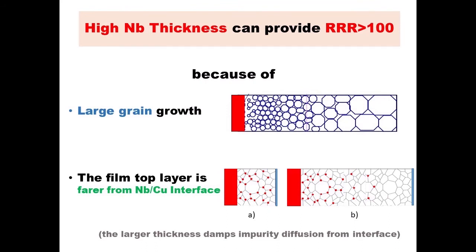Can a high niobium thickness provide RRR greater than 100? Yes, for several reasons. A larger thickness produces larger grain growth, and larger grain size gives higher RRR. Additionally, impurities can diffuse from the niobium-copper interface. With a small thickness, the top layer reached by the RF field is immediately contaminated by impurities. With a very large thickness, diffusion of impurities from the interface is much, much slower.